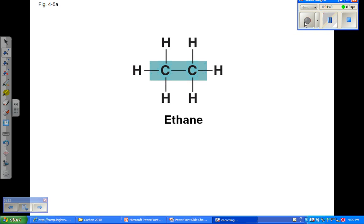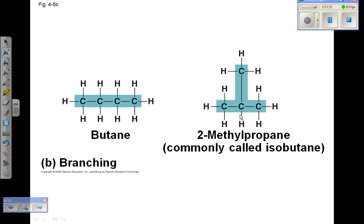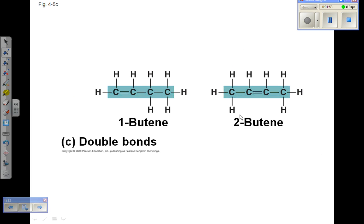Chains of carbons form the skeletons of most organic molecules. These skeletons can vary in length and shape, occurring as straight, branched, or ring structures.